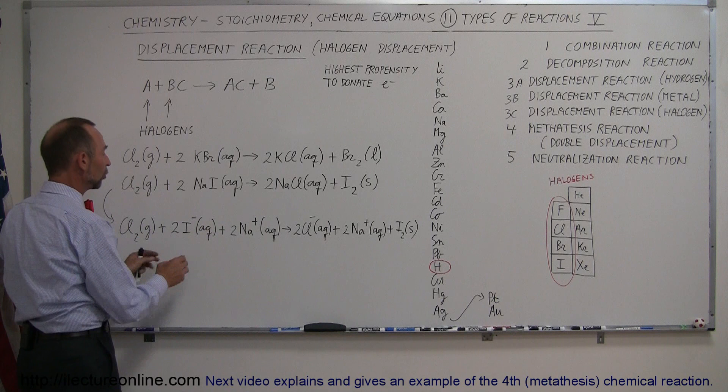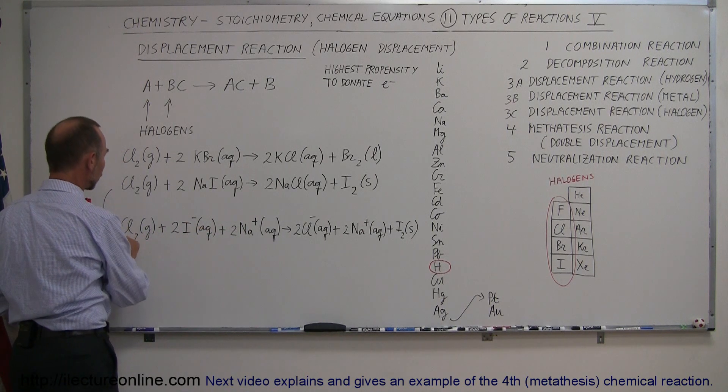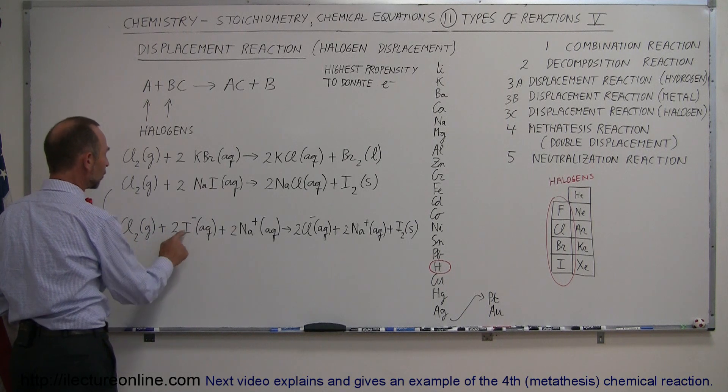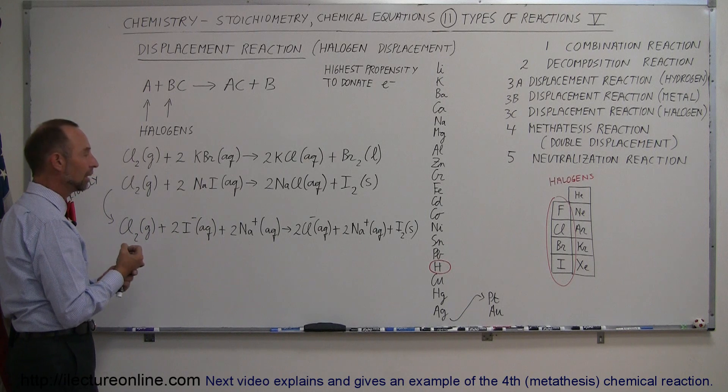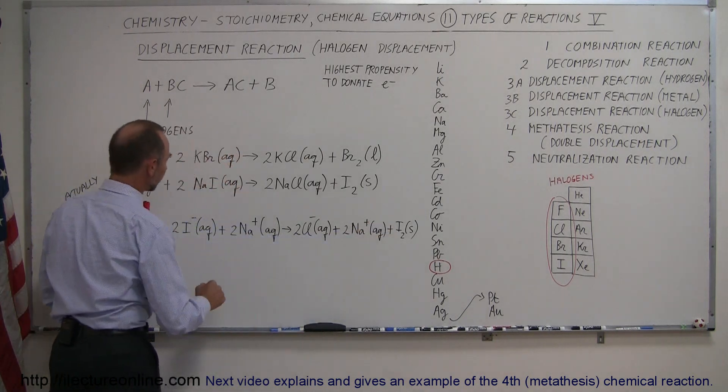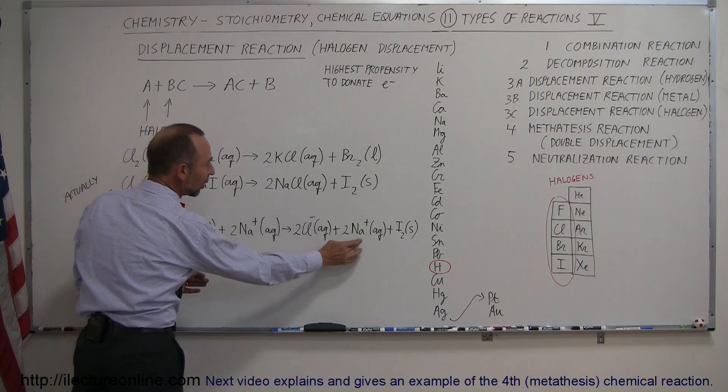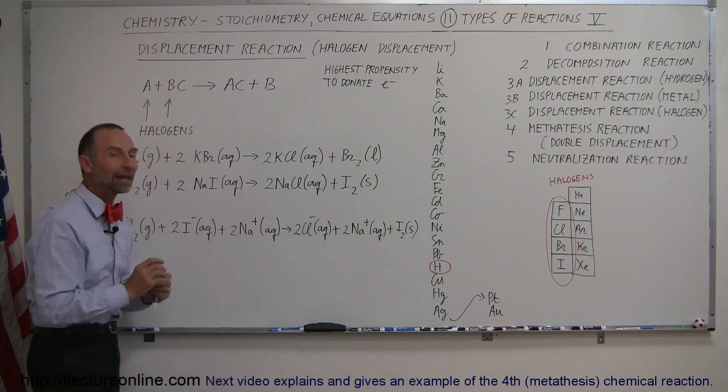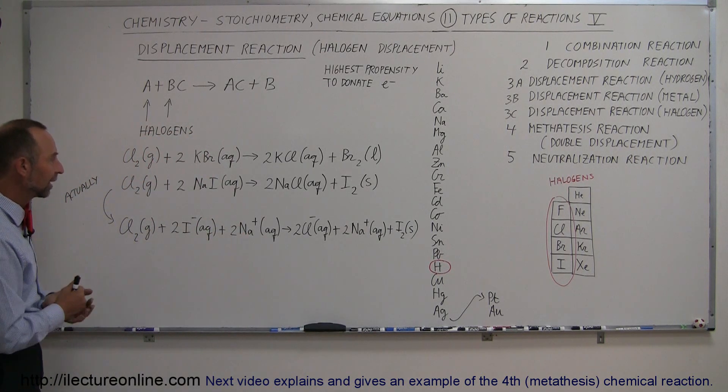The chlorine gas is bubbled in and gives electrons to the iodine ion, which becomes neutral and becomes an atom. It then precipitates out as a solid, while the chlorine remains in the aqueous solution as an ion along with the sodium to balance the negative and positive ions in the solution.